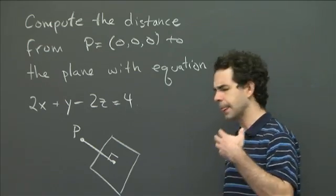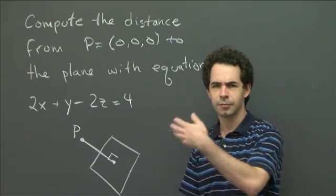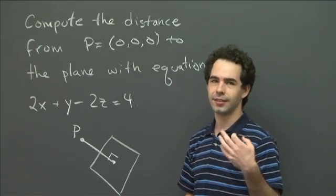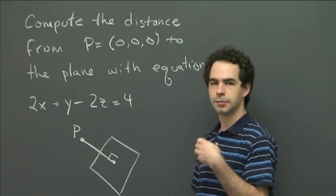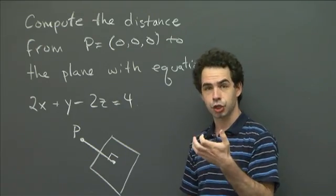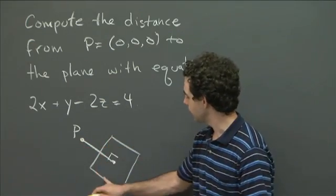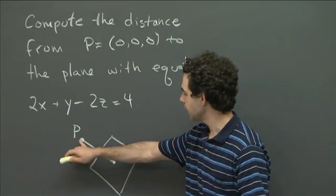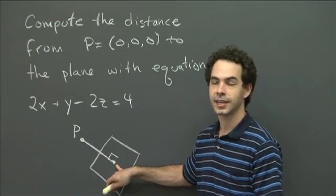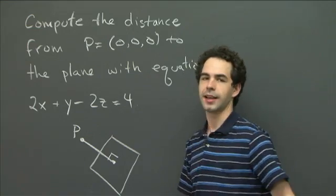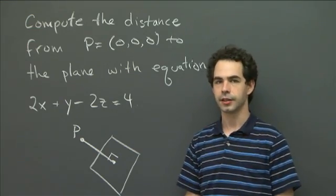Just to remind you, the distance — there are lots of points on a plane, of course, and our point in question has a distance to each of them. When we talk about the distance between a point and a plane, what we mean is the shortest distance, so the perpendicular distance. So if we have the plane and we have the point, we want to drop a perpendicular from the point to the plane, and then we're asking for the length of that segment. That's the distance between the point and the plane.